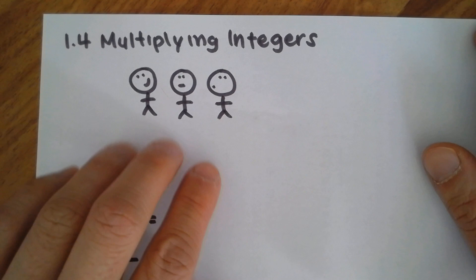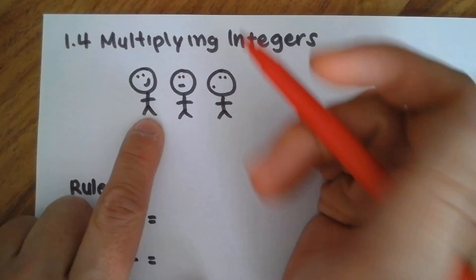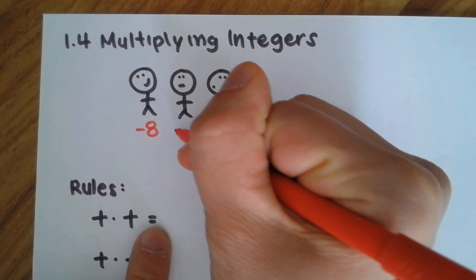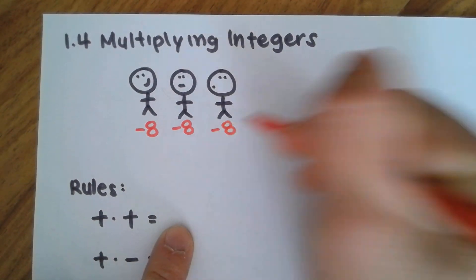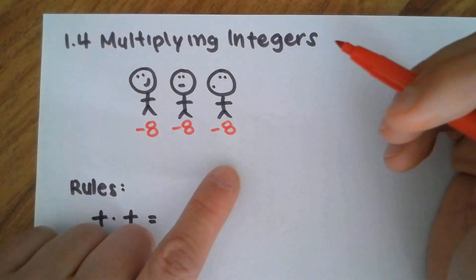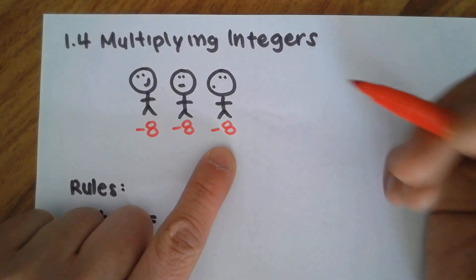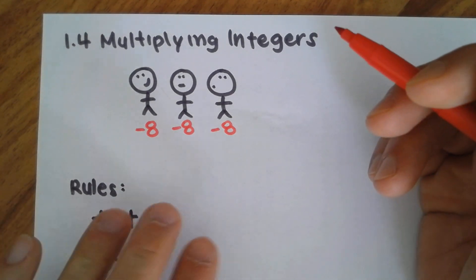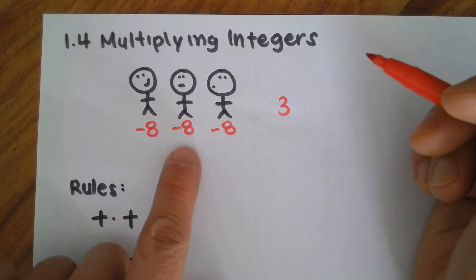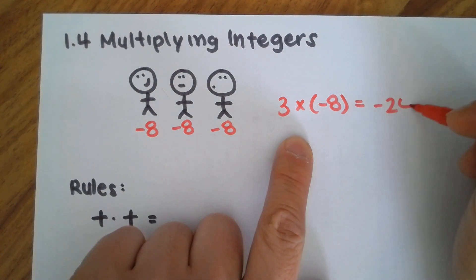Let's listen to a little story here. Let's say there are these three guys, and maybe this guy right here owed $8, this guy owed $8 too, and this last guy also owed $8. So how much money do they all owe in total? A lot of you guys will say negative eight plus negative eight plus negative eight — that's going to be negative 24. So if you were to write this as a multiplication problem, you could write three times negative eight, which gives you negative 24.